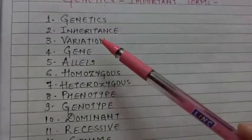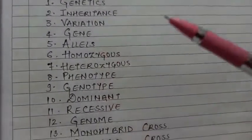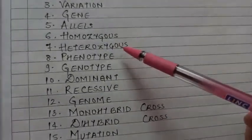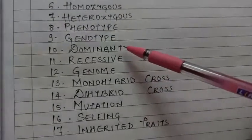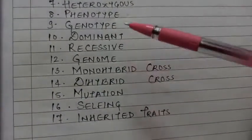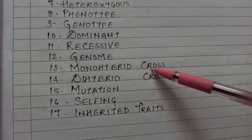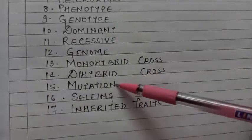Then comes variation, gene, alleles, homozygous, heterozygous, phenotype, genotype, dominant, recessive, genome, monohybrid cross, dihybrid cross, mutation.